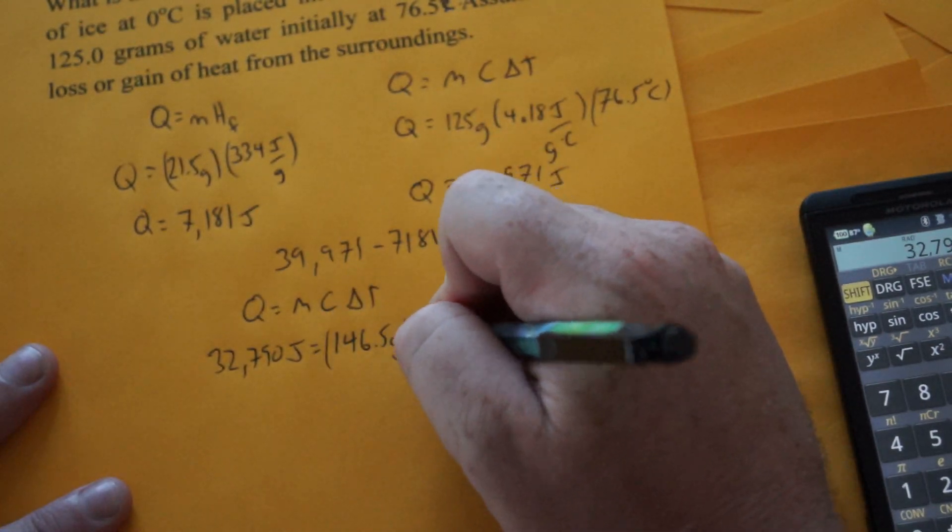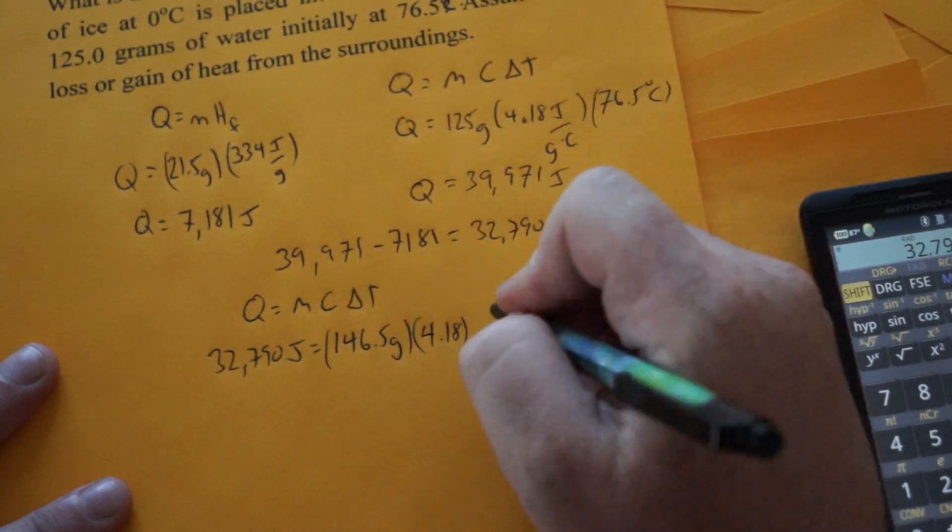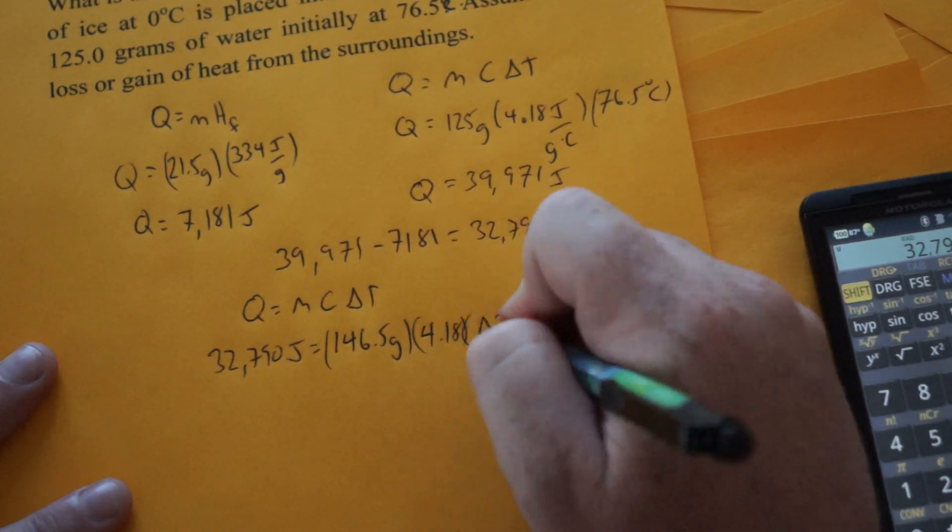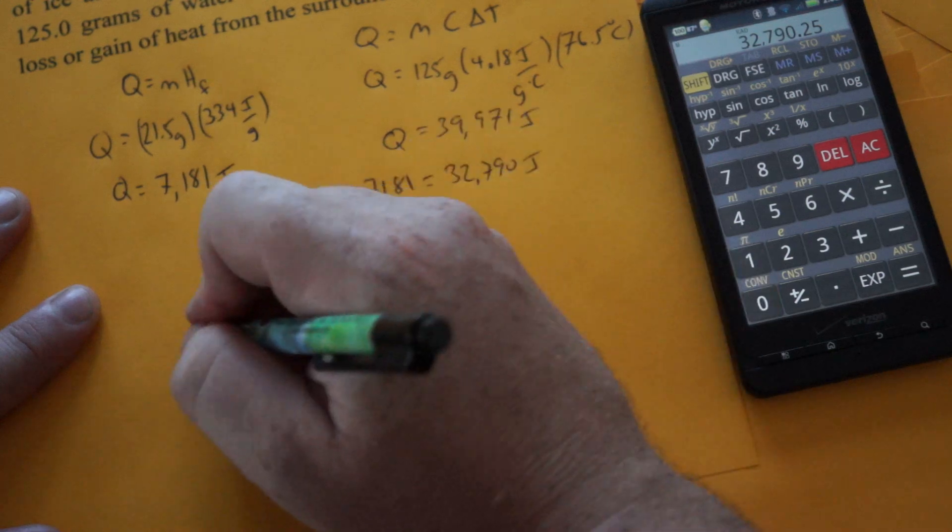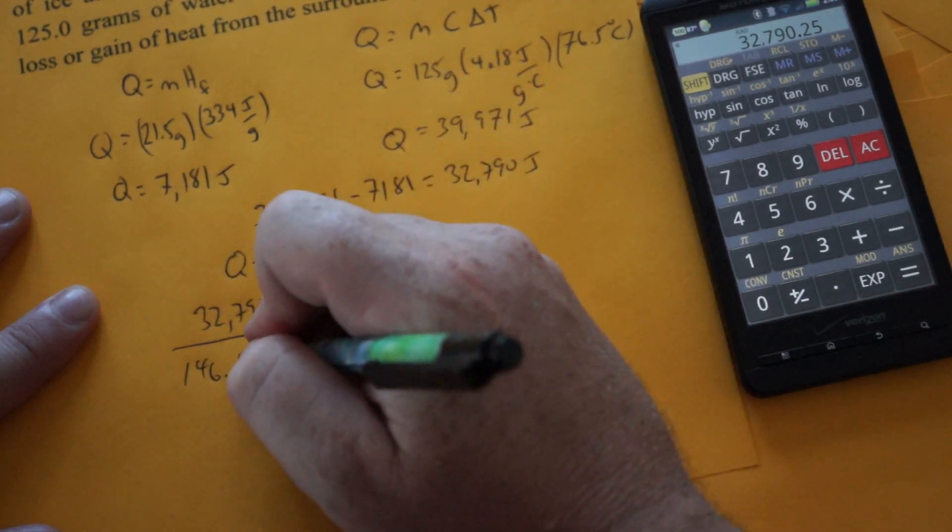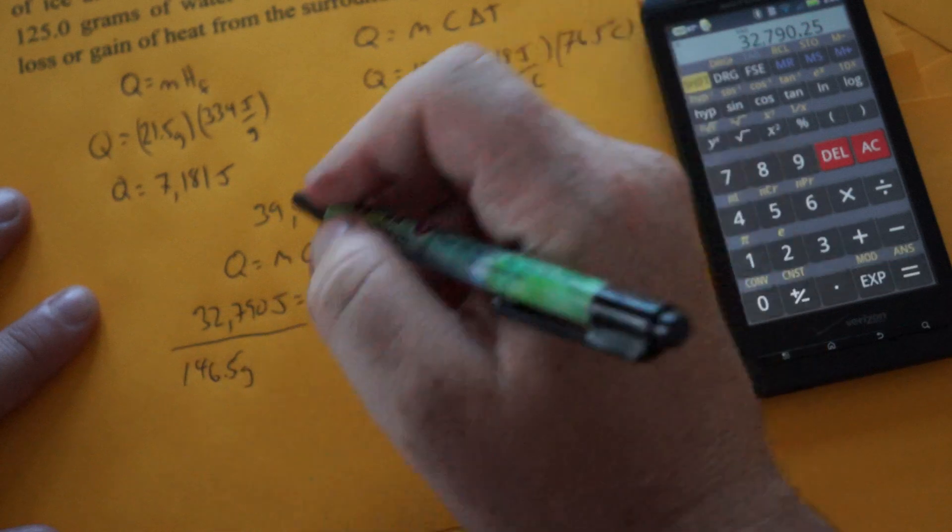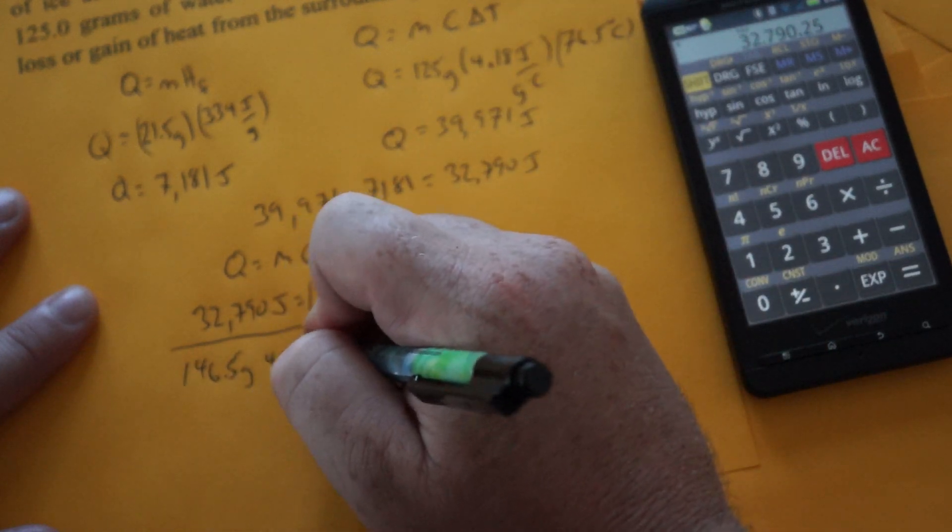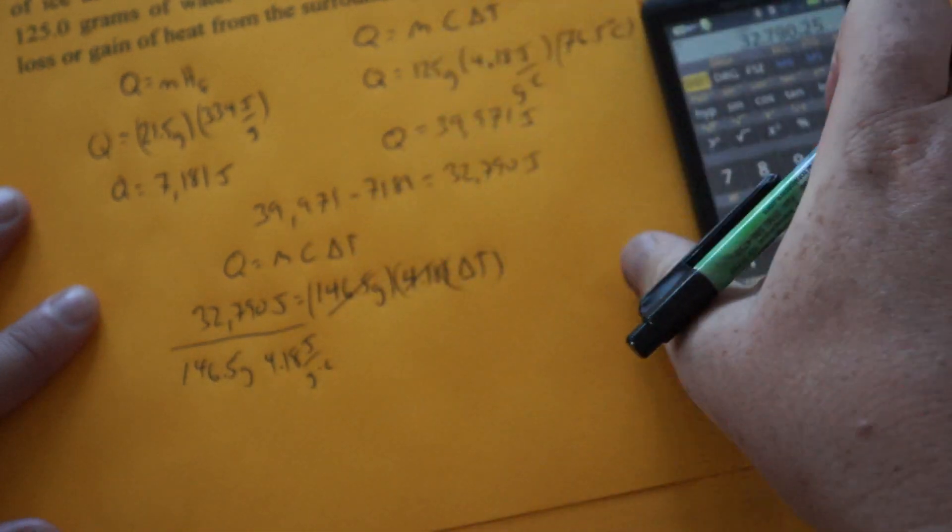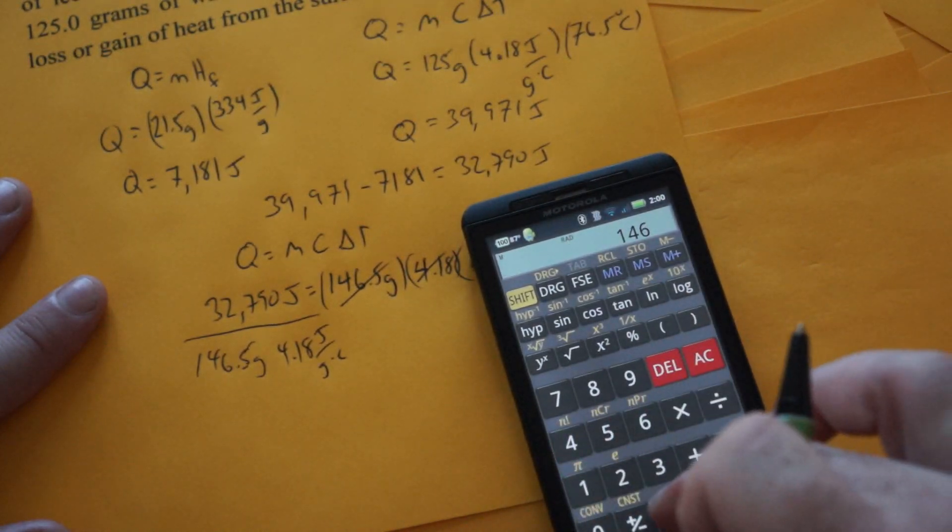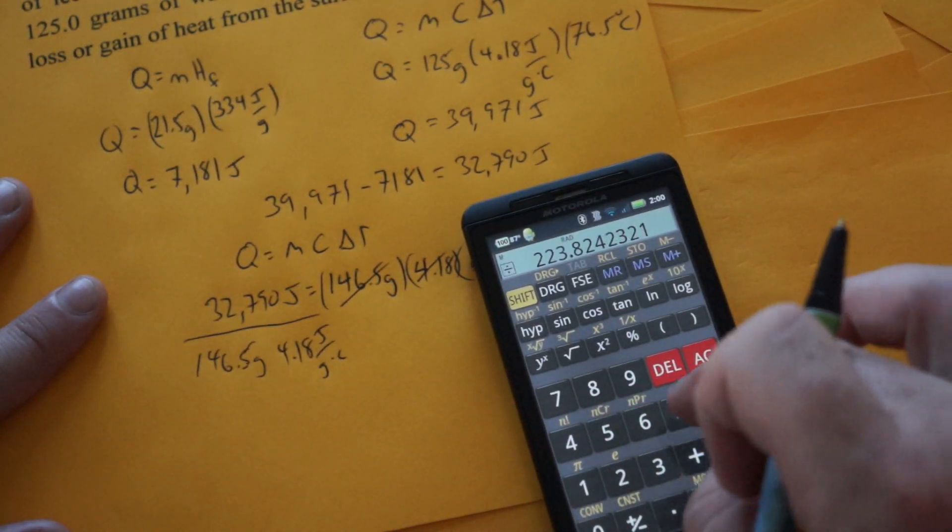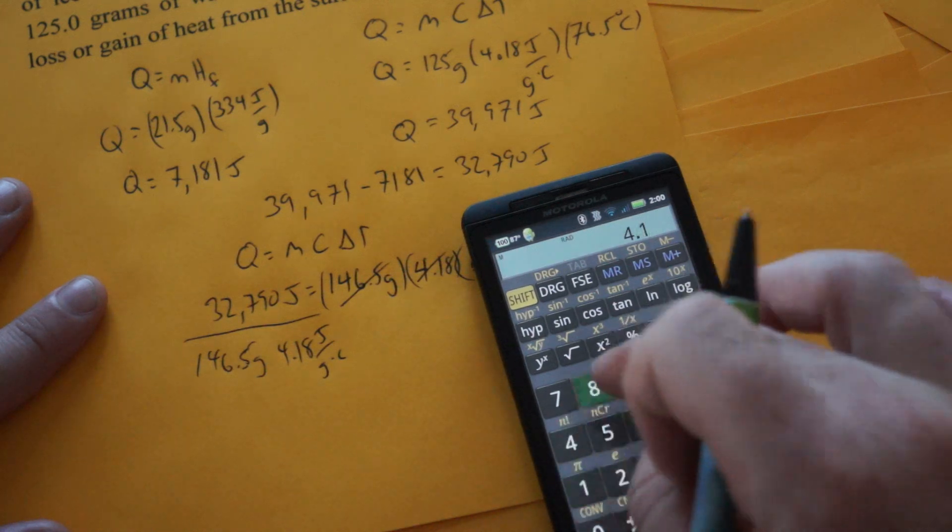So we're going to go over the 4.18, and our delta T would be from zero degrees now. So what we can do is we'll just bring these two numbers over: grams and 4.18 joules per gram degrees Celsius. So we'll just divide this by 146.5 and divide it by 4.18.